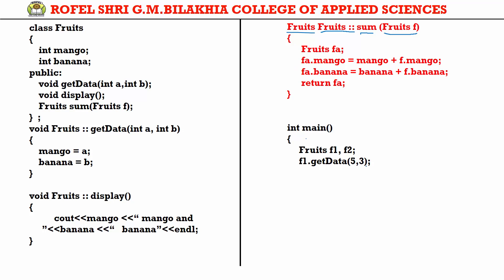Similarly for the second object F2, we call getData with 4 and 6. So A gets 4 and B gets 6, meaning mango equals 4 and banana equals 6 in object F2.